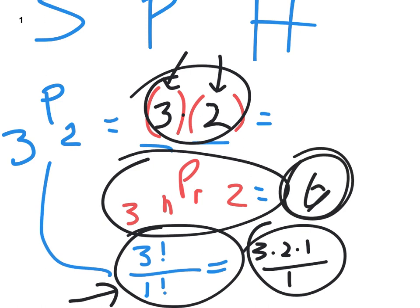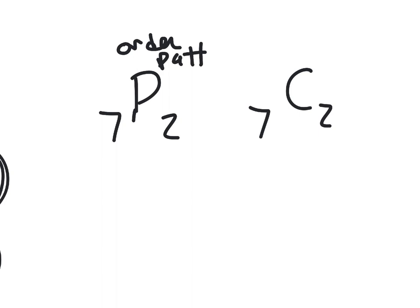That's how you do permutations and the order patters. Well, because I'm using a P, I'm trying to get you to get the difference between 7P2 and 7C2. In a permutation, the order matters. And I'm saying it with the P to connect it to every time you see a P, you should think order patters, order matters.